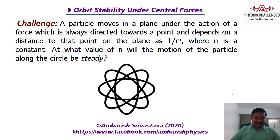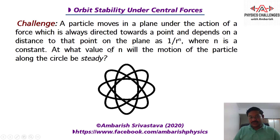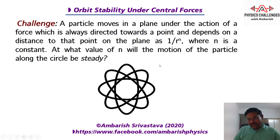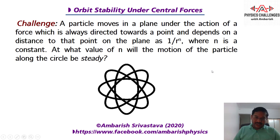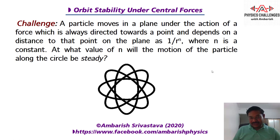Here comes the challenge: a particle moves in a plane under the action of a force which is always directed towards a point and depends on the distance to that point as 1/rⁿ, where n is a constant. At what value of n will the motion of the particle along a circle be steady? We want the particle moving along the circle to have stable motion — if it is given a kick in the outward or inward direction, it should not spiral all the way outwards. Give it a try for five or ten minutes, then come back for the elegant solution.